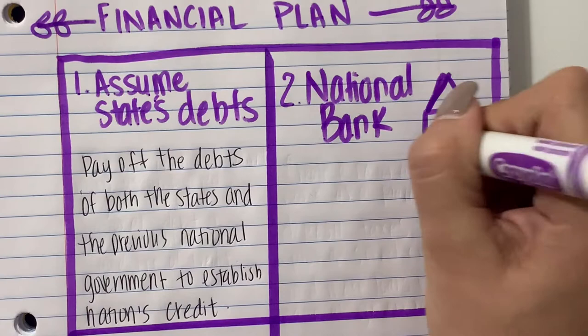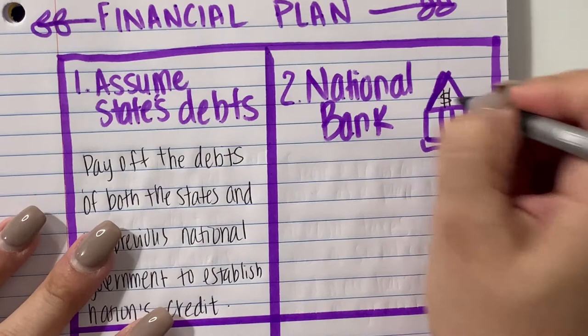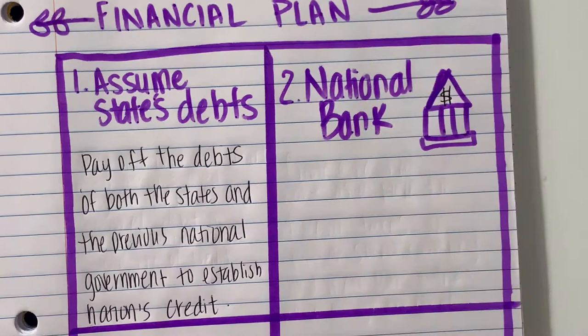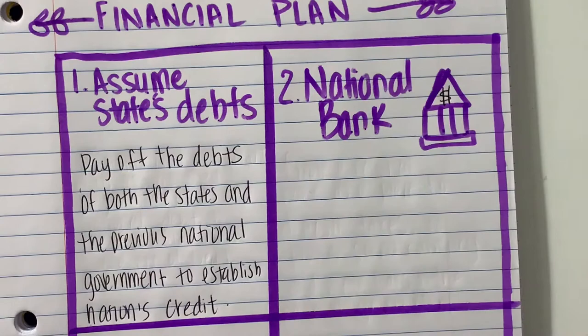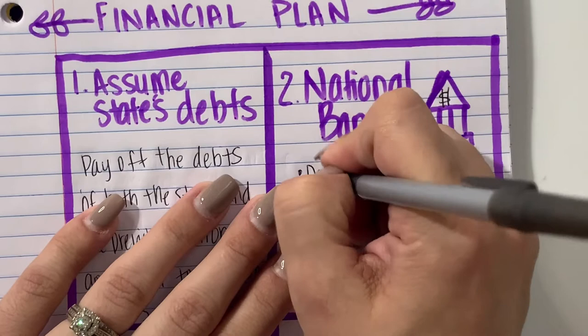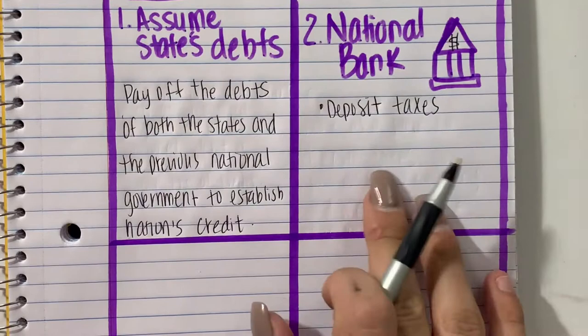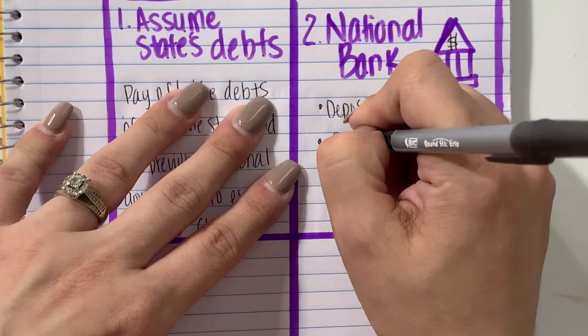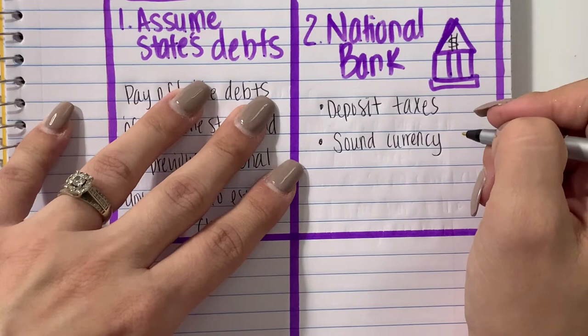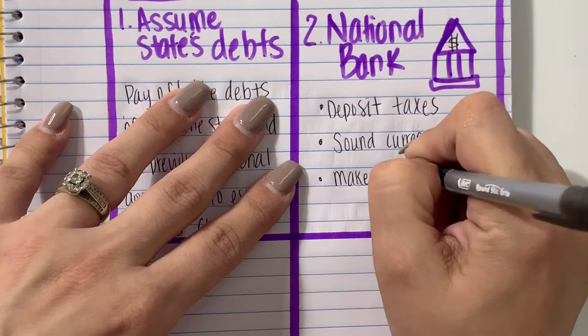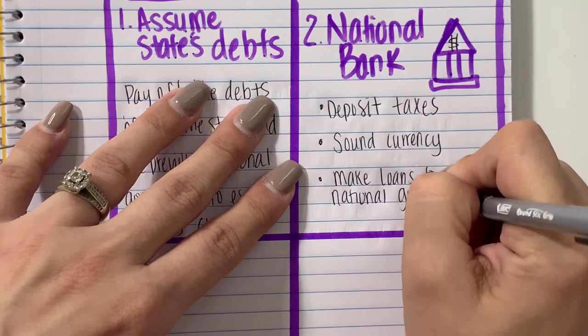Here I'm going to draw a little bank with pillars. Hamilton is actually on the $10 bill — every time we think of Hamilton, think money, because that was his main job. For number two, we're going to write the national bank with bullet points: deposit taxes, create a sound currency — meaning the same common currency — and make loans to the national government.